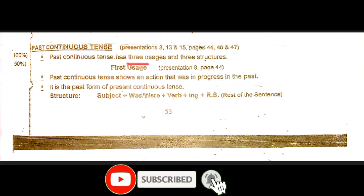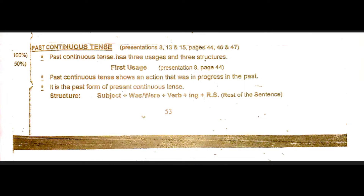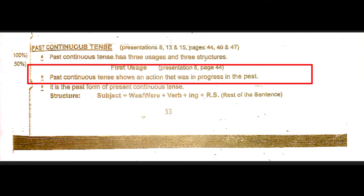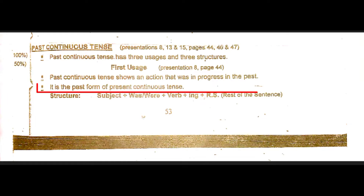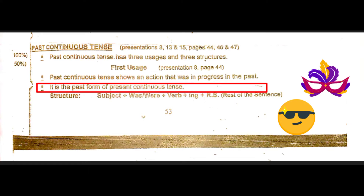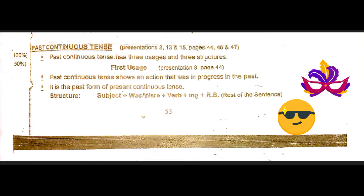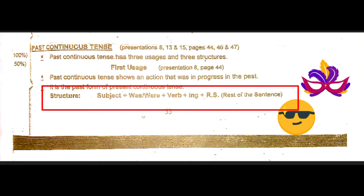Past continuous tense has three uses and three structures. The first use: past continuous tense shows an action that was in progress in the past. It is the past form of present continuous tense. The structure is: subject + was/were + verb-ing + rest of the sentence.